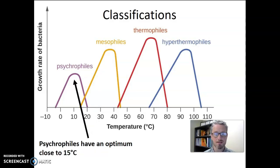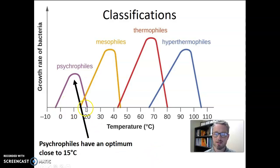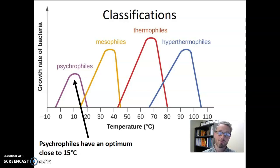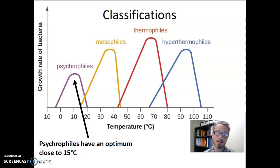Next are the psychrophiles. Psychrophiles have an optimum temperature somewhere around 15 degrees Celsius, but they can grow from below zero degrees Celsius up to maybe 20 degrees Celsius — they are organisms that like colder temperatures. For a human health-focused microbiology class, psychrophiles don't represent much of a risk because our body is too warm for them to grow, so they don't represent a group of human pathogens.